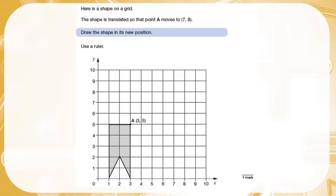Now if you have a look at the last part, the last instruction, it tells you to use a ruler. If your drawing is not neat and accurate, you will lose marks. You have to make sure that you are drawing on the lines and you are drawing it to the same size that it originally was.